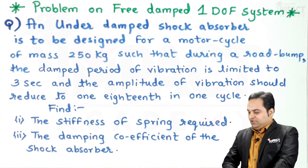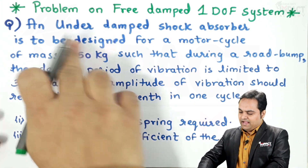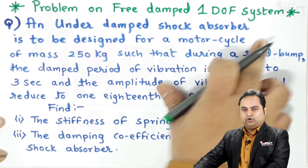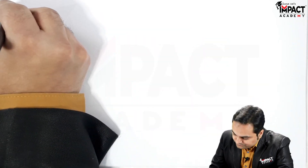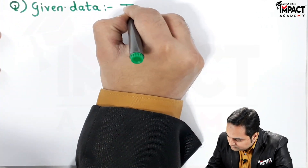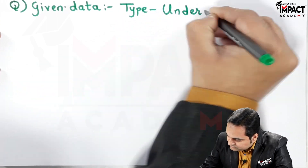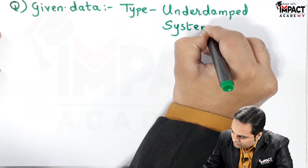Hi friends, in this video I'll be explaining a problem on a free damped 1-DOF system. Here is the question: it is given an underdamped shock absorber.